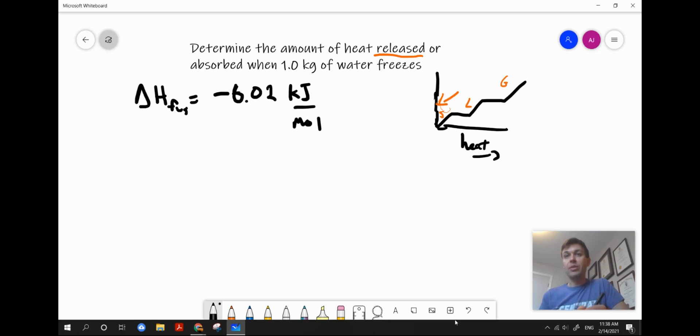So 6.02 kilojoules per mole of water is going to be released when water freezes. Now, in order to find the amount of heat, we need to multiply the heat of fusion by the moles that we have. In this question, I'm given a mass, so let's take the steps now and convert this mass in kilograms to moles.